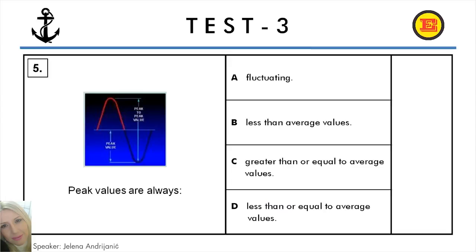Question number 5. Peak values are always: A: Fluctuating, B: Less than average values, C: Greater than or equal to average values, D: Less than or equal to average values. And the correct answer is C: Greater than or equal to average values.